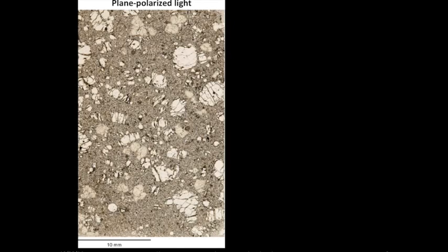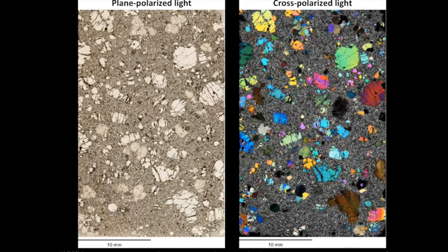If we change the conditions of the microscope so that the light is under what's called cross-polars — two polarizing filters in — the exact same specimen looks very different. All of a sudden it's filled up with different colors, and those colors are different for different minerals. Some are very bright.